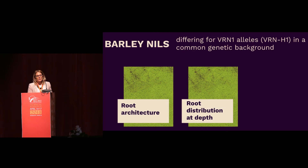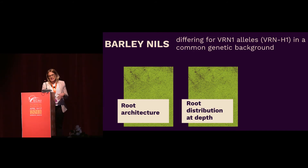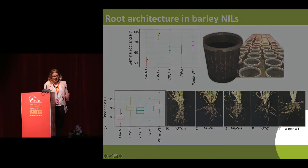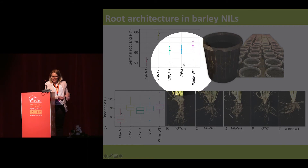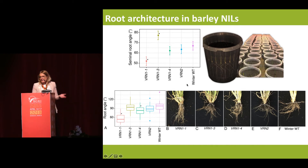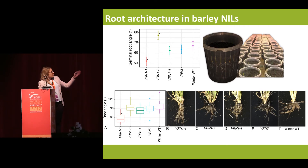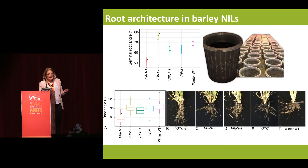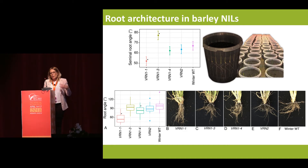We then went across species to see whether VRN1 has an influence in barley, which is somewhat related to wheat. We looked at near-isogenic lines in barley with four different spring alleles and one winter allele. Using the clear pot method and shovelomics, we found that the different spring alleles result in different root system architectures. VRN1-1 had a significantly reduced root system architecture compared to the winter line, while VRN1-3 had a significantly wider root system architecture. What we saw in the clear pot was relatively representative of what we saw in the field through shovelomics.